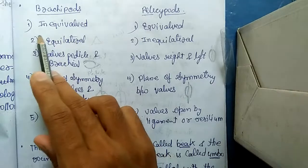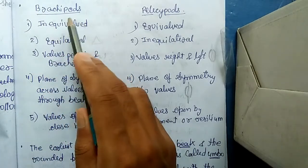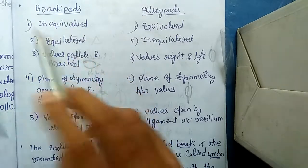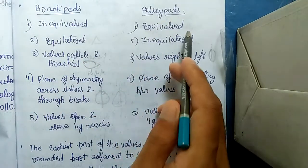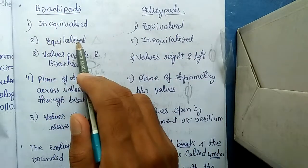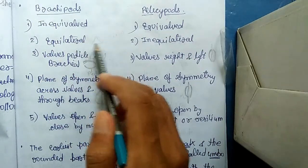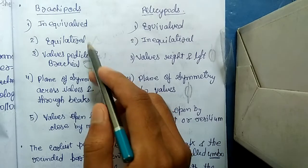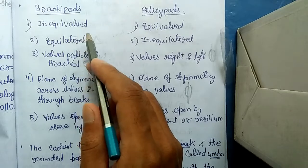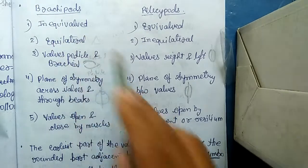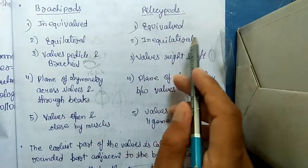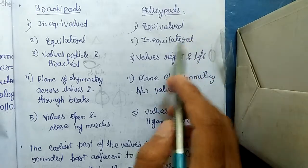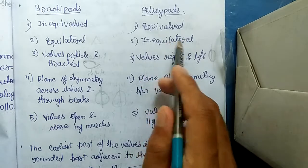The first difference is inequivalve versus equivalve: in Brachiopoda the valves are unequal, and in Pelecypoda they are equal. The second difference is equilateral versus inequilateral: if we see only one valve of Brachiopoda, its sides appear almost equal, so Brachiopoda are equilateral. In Pelecypoda, if we see only one valve, the sides do not appear equal, so they are inequilateral.